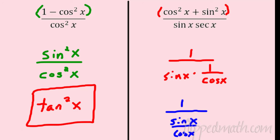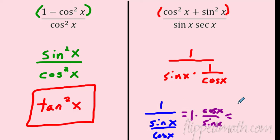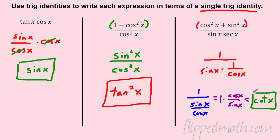To simplify a fraction divided by a fraction, flip the bottom fraction and multiply. So it becomes one times cosine over sine, and one times anything is itself. Cosine over sine is just cotangent. So the whole expression simplifies to cotangent.